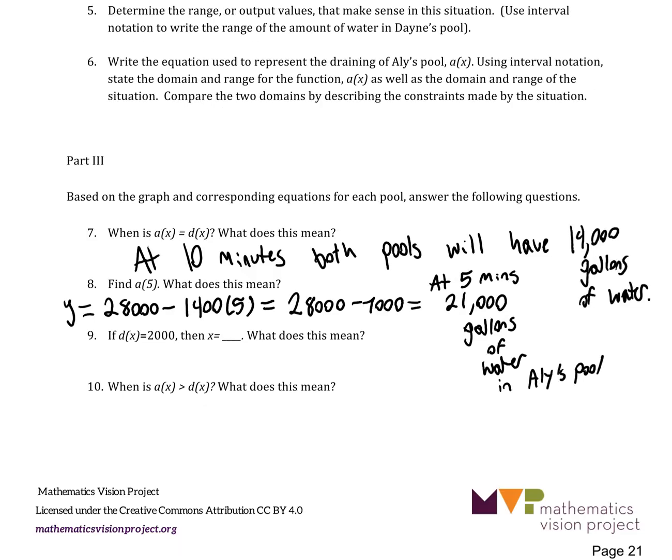So, similarly, we could answer a question like number 9. So, the equation for D of X for Dane's pool was 24,000 minus 1,000X. And we want to know when that's going to equal 2,000.